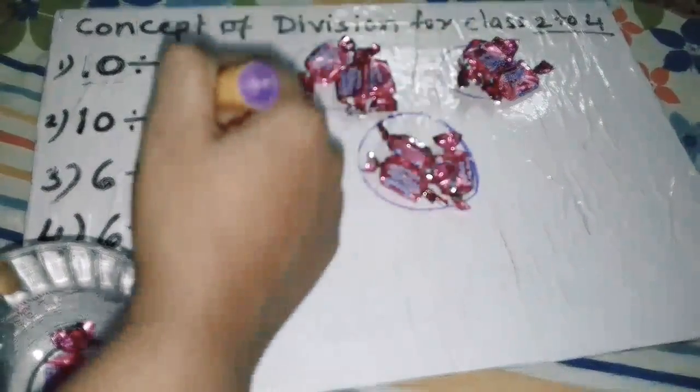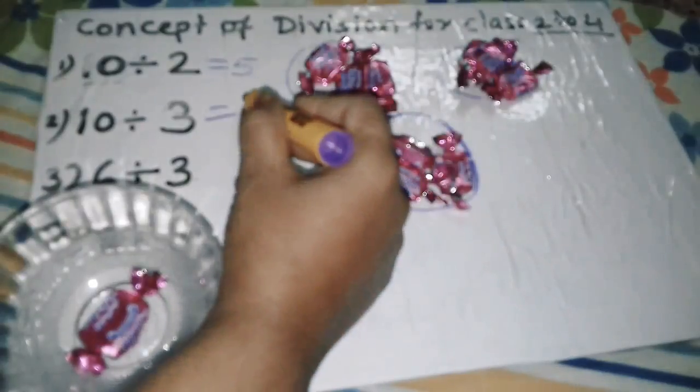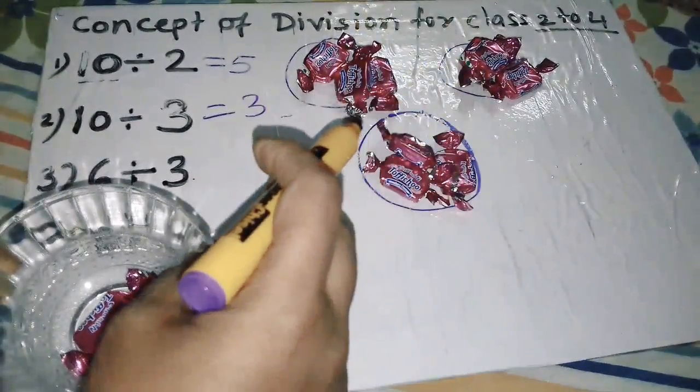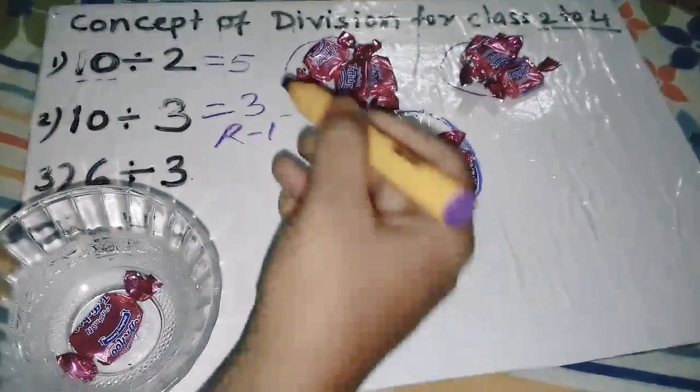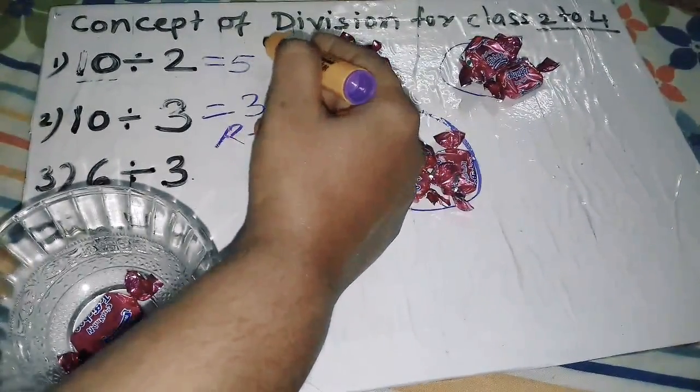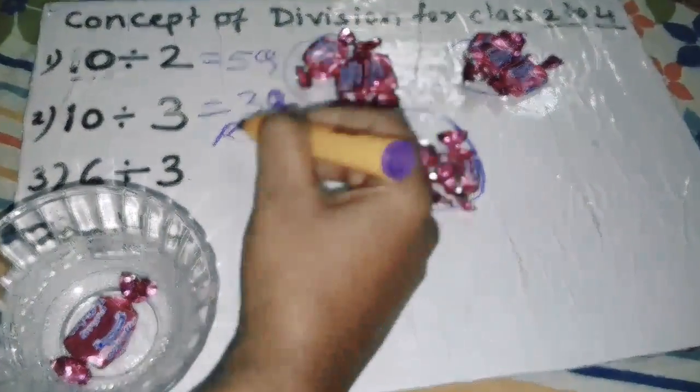10 chocolates divided among 3 students or 3 friends, and the answer is 3 chocolates. What about one chocolate? That one chocolate will be the remainder. These answers are quotient, and in this case one is remainder.